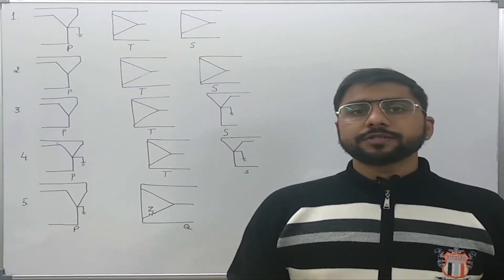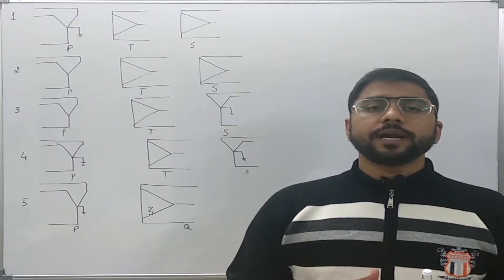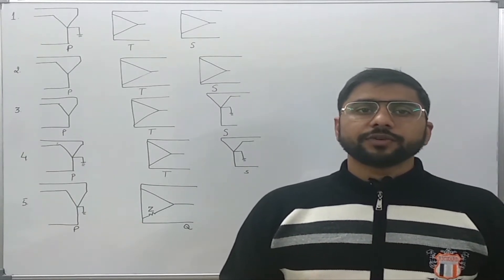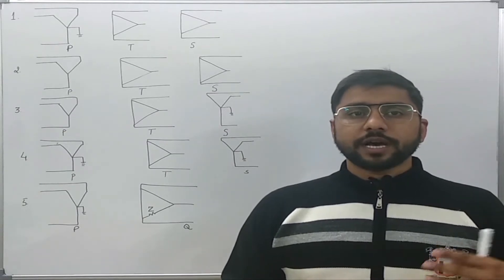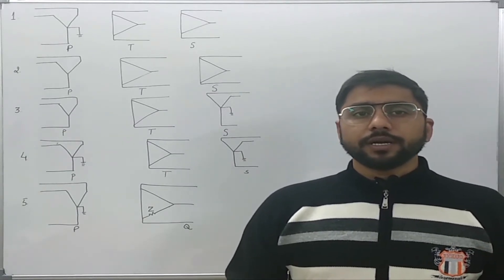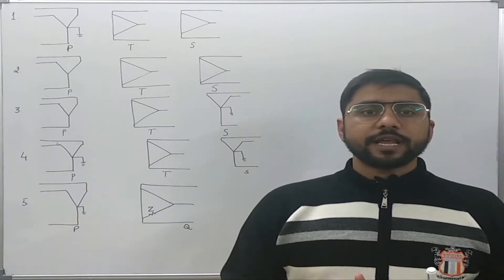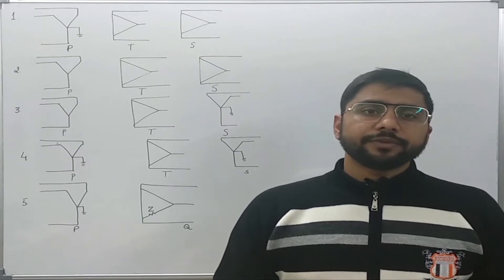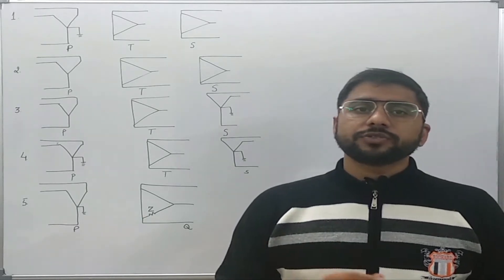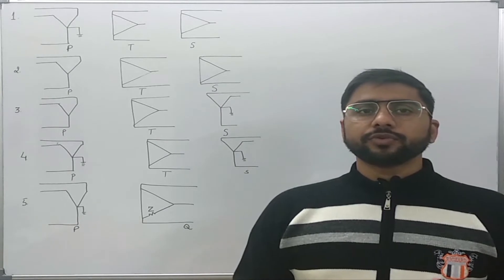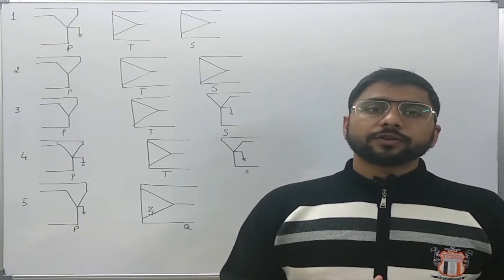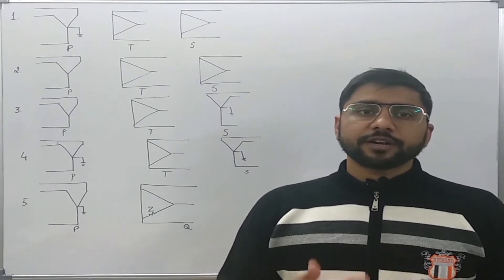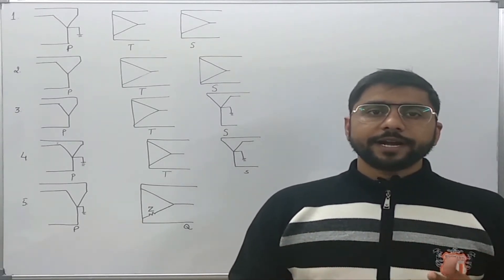In our previous lecture we studied how to formulate the zero sequence network for three-phase transformers for various kinds of connections — whether it is star-delta, or star with neutral grounded or not grounded. According to these various connections, we tried to formulate some thumb rules so that we can form the zero sequence network for any kind of connection. To improve that concept further and have a firm grasp on it, let us solve some more examples.